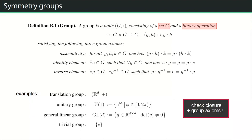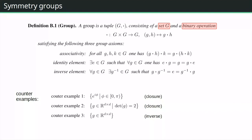Some counter-examples: unit-norm complex numbers restricted to angles from 0 to π do not form a group because multiplying two elements near π produces a result outside the set — no closure. Similarly, d×d matrices with determinant 2 are not closed since multiplying two such matrices gives determinant 4. And all d×d matrices fail because non-invertible matrices have no inverse.